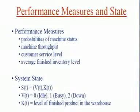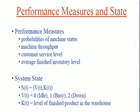In the discrete event simulation for this particular example, we are interested in finding the machine throughput, probability of machine status, customer service level, and average finished inventory. As previously described, the state is characterized by v(t) — the machine status — and k(t) — the level of finished product in the warehouse.